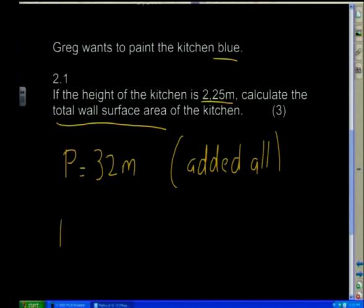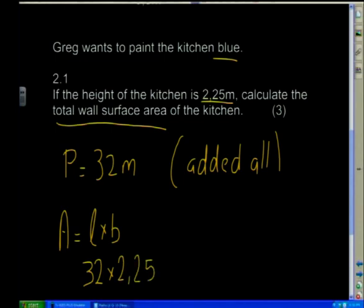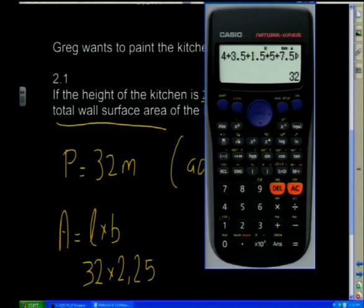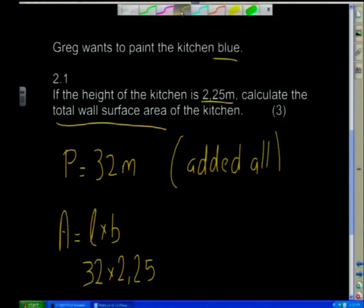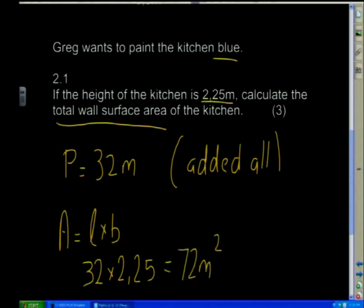Now I'm going to work out the area of the walls. That's going to be length times breadth — my length in this case is my perimeter, so 32 times the height of 2.25 meters. Using the calculator: 32 times by 2.25 gives an answer of 72 meters squared. That is what he needs to paint all the walls.